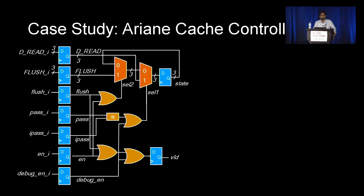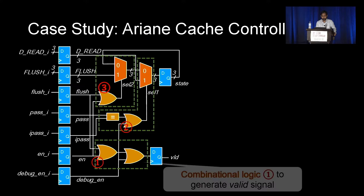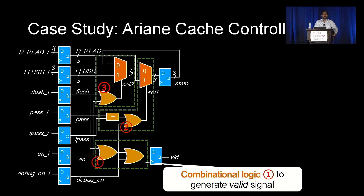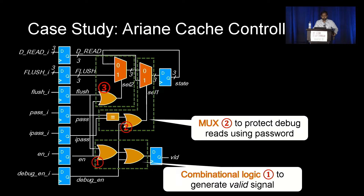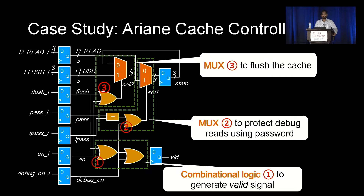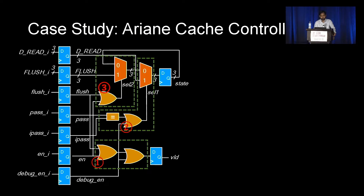Before I get into the design of our fuzzer, I'd like to highlight the pros and cons of existing hardware fuzzers and discuss the types of coverage metrics they use, using this case study example. The hardware logic shown here is a stripped-down version of a cache controller, inspired from the one in Ariane, an open-source RISC-V processor. It mainly has three components.